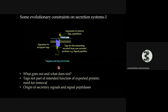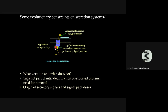One constraint a cell faces is what goes out and what does not — for example, RNA polymerase must remain inside, while an amylase that degrades carbohydrates in the environment must go out. So one constraint the evolution of any secretion system faces is the emergence of a tag — some form of peptide signal within the outgoing polypeptide that can be recognized, like a zip code saying this has to go outside the cell.